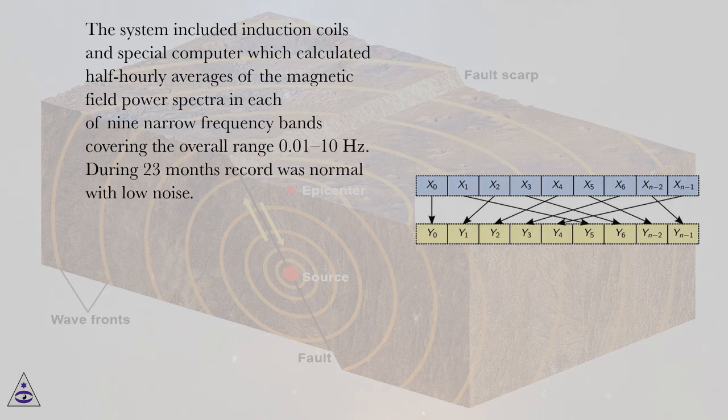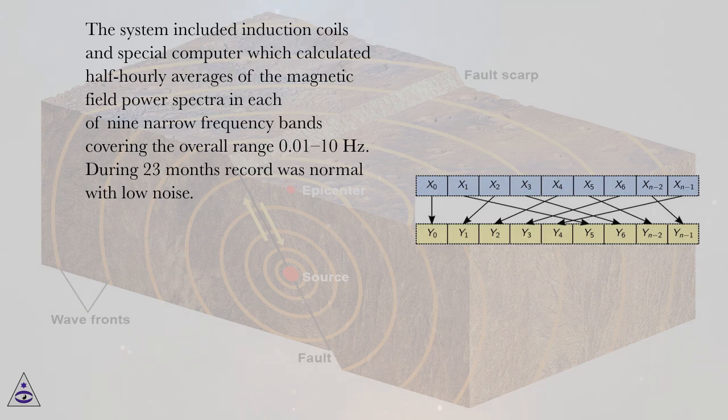The system included induction coils and special computer which calculated half-hourly averages of the magnetic field power spectra in each of nine narrow frequency bands covering the overall range 0.01 to 10 Hz. During 23 months record was normal with low noise.